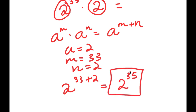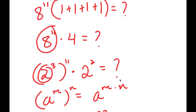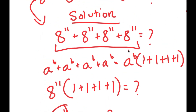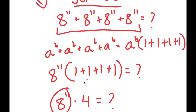So 2 to the power of 35 is my final answer — I can't simplify it further because it's a very large number. Also, the solving process could have been faster: in the first step, I took 3 steps to rewrite 8 to the power of 11 plus itself 4 times as 8 to the power of 11 times 4. But you can simply see that when the same term adds itself x times, it equals that term times x — that's the faster approach.